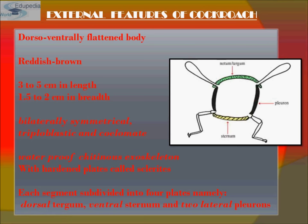They are waterproof because of a chitinous exoskeleton — an exoskeleton made of chitin with hardened plates called sclerites. Each segment is subdivided into four plates: the dorsal tergum, the ventral sternum, and two lateral pleurons. The dorsal tergum is on top, the sternum is on the ventral side, and the two pleurons are on the sides.